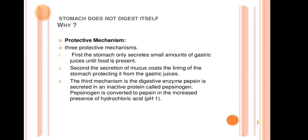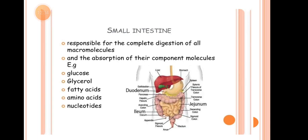Next are the Protective Mechanisms of the stomach. There are 3 protective mechanisms: First, the stomach only secretes small amounts of gastric juices until food is present. Second, the secretion of mucus coats the lining of the stomach, protecting it from gastric juices. Third, the digestive enzyme pepsin is secreted in an inactive form called pepsinogen, which is converted to pepsin in the presence of hydrochloric acid (pH 1).